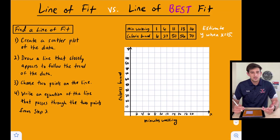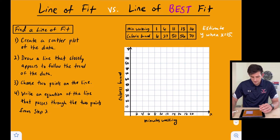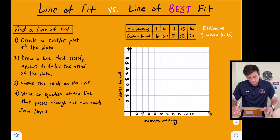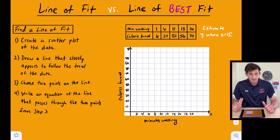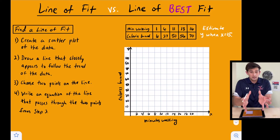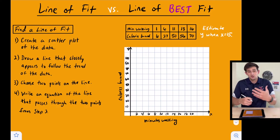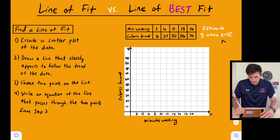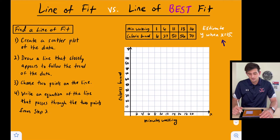We have a couple of different ways we could do that — we could use slope-intercept form or point-slope form. So over here on the right we have minutes walking as our X variable and calories burned as our Y variable. We're going to plot our points, draw in our line of fit, find the equation, and then estimate when X is 15, what is Y?